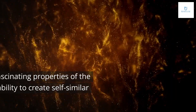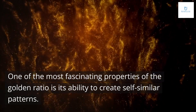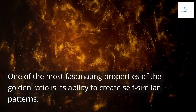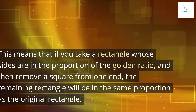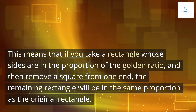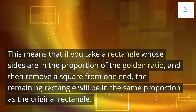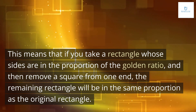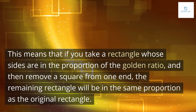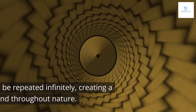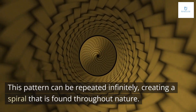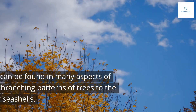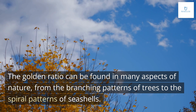One of the most fascinating properties of the golden ratio is its ability to create self-similar patterns. If you take a rectangle whose sides are in the proportion of the golden ratio and remove a square from one end, the remaining rectangle will be in the same proportion as the original. This pattern can be repeated infinitely, creating a spiral found throughout nature.